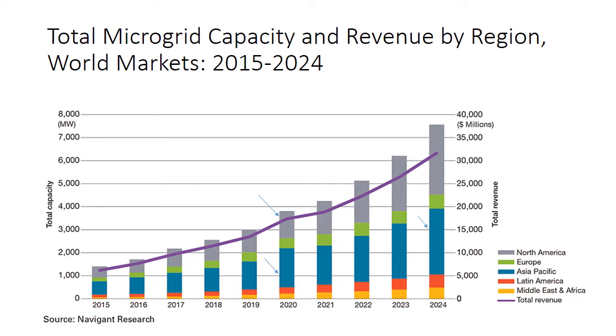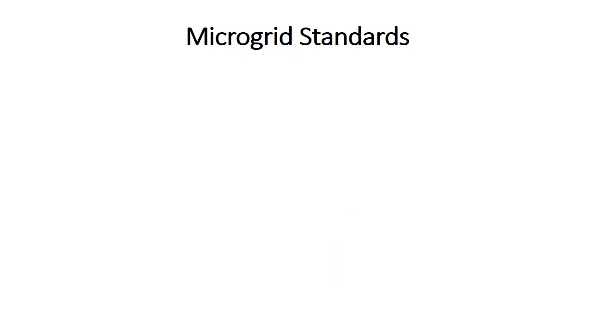It is expected to reach more than 3,000 megawatts in the Asia Pacific region by 2024. Now let us discuss microgrid standards — I am going to explain four important standards, majorly divided into two groups.